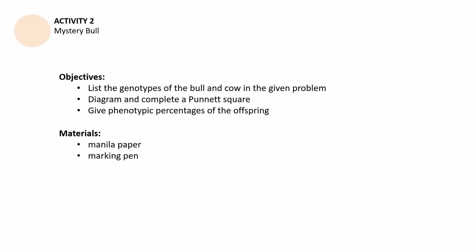Activity number 2, Mystery Bull, is the last part of this session. We have the following objectives. First, list the genotypes of the bull and cow in the given problem. Second, diagram and complete a Punnett square. Third, give phenotypic percentages of the offspring. The materials to be used are manila paper and marking pen. Of course, these are applicable if we have face-to-face instruction.